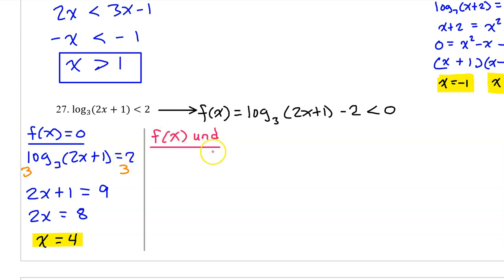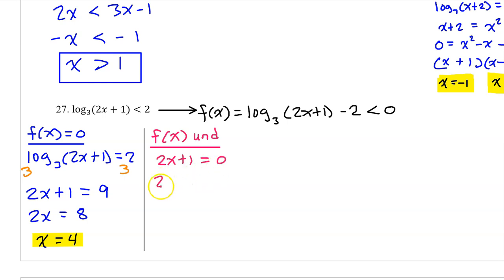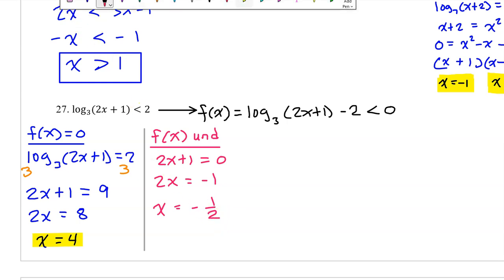The other critical values come from where f of x begins to be undefined — that's where the argument, the stuff on the inside, is equal to 0. Setting 2x plus 1 equal to 0: subtracting 1 gives 2x equals negative 1, then dividing by 2 gives x equals negative one half. This is the other critical value that will go on the sign chart.